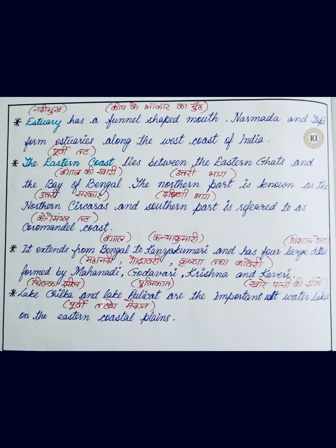It extends from Bengal to Kanyakumari — Bengal se Kanyakumari tak iska stretch hai — and has four large deltas formed by Mahanadi, Godavari, Krishna, and Kaveri. Unlike the western coast where estuaries are formed and no deltas, here deltas are formed — and not just deltas but four large deltas — by these four rivers: Mahanadi, Godavari, Krishna, and Kaveri.